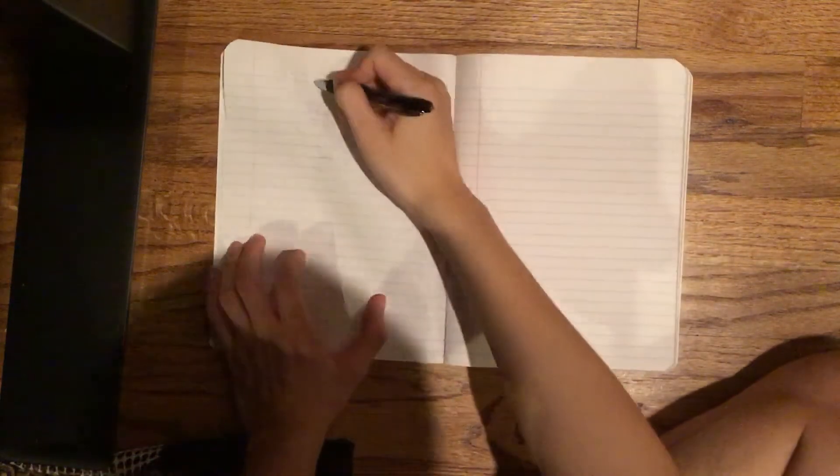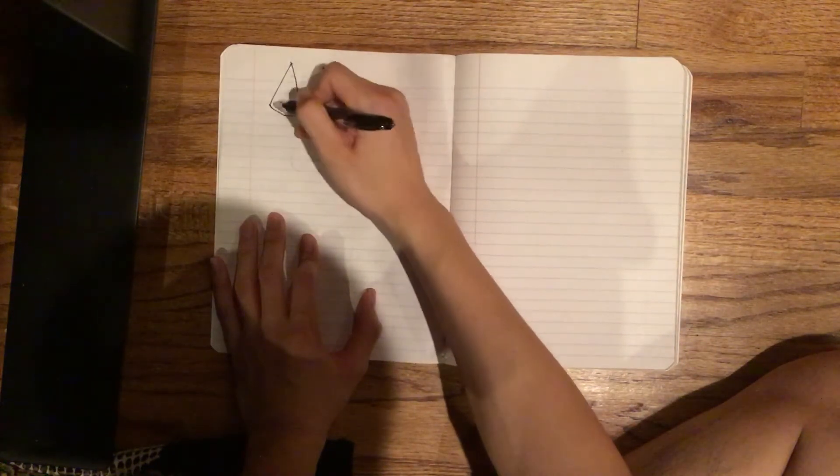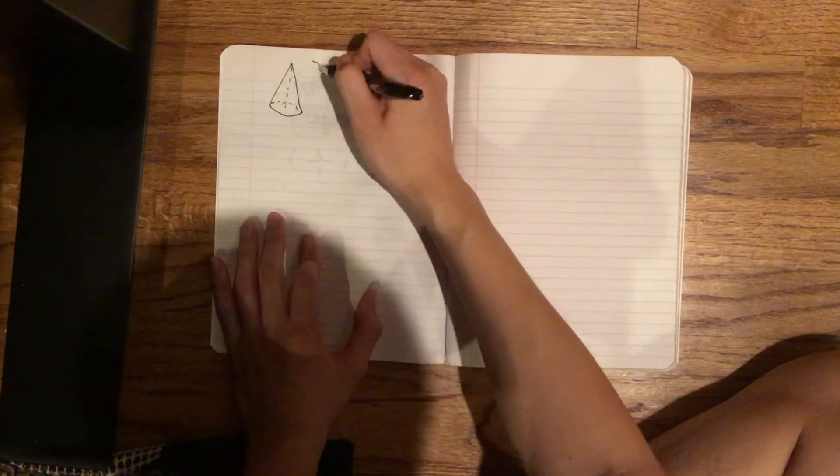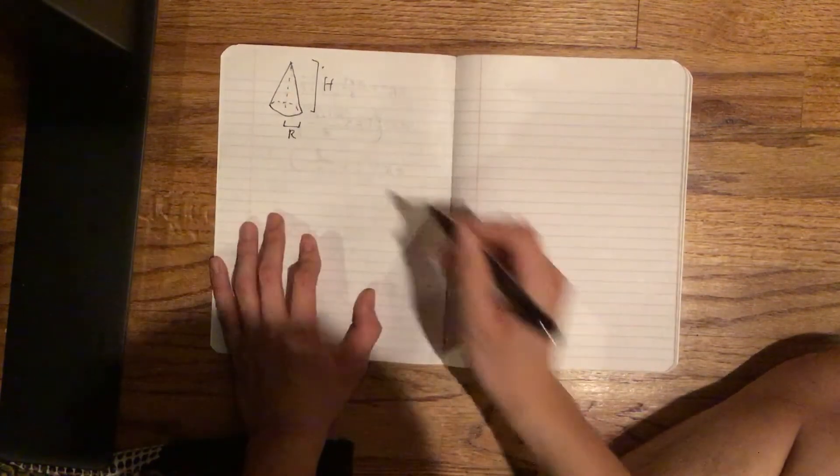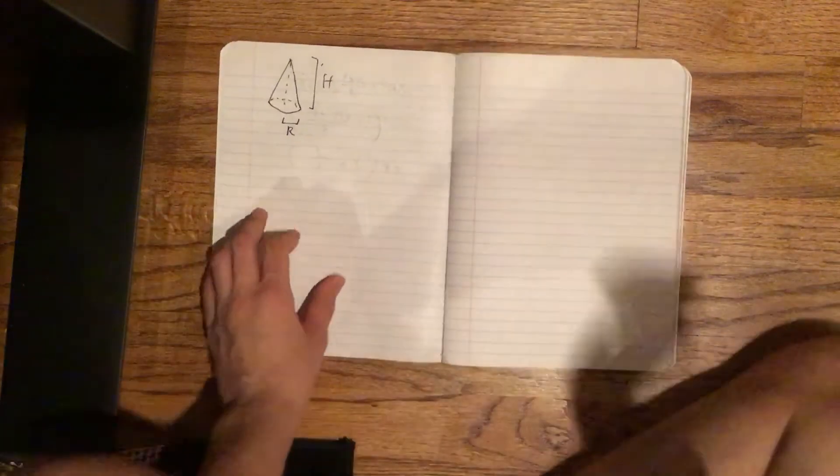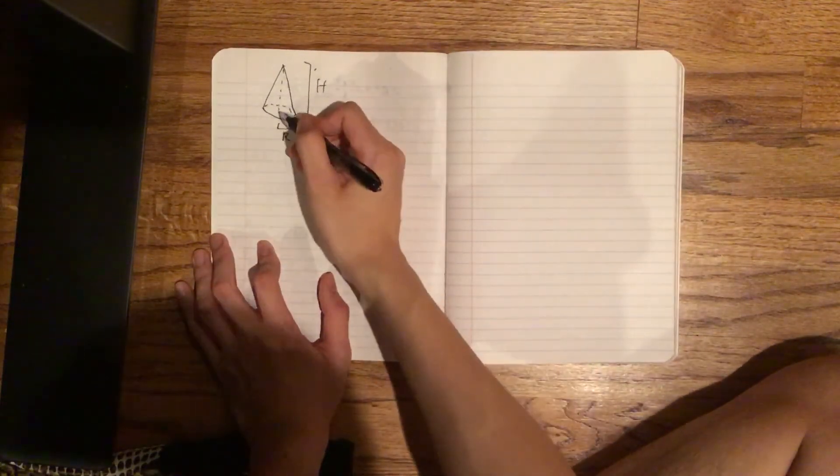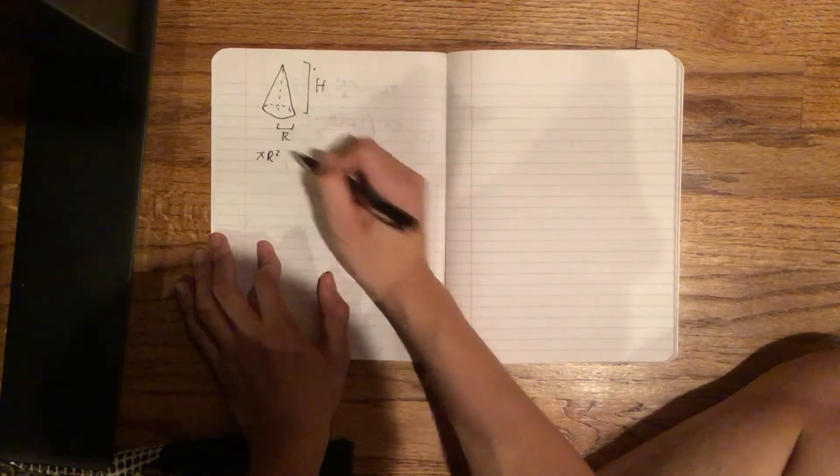Today I'll be deriving the surface area of a cone. Let h denote the height and let r denote the radius. As a preliminary, we know what the bottom part of the cone is. It's just πr².